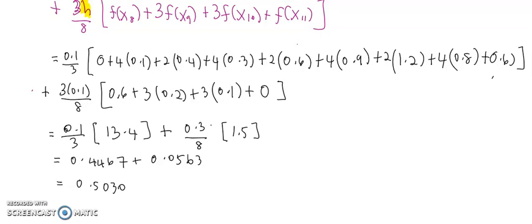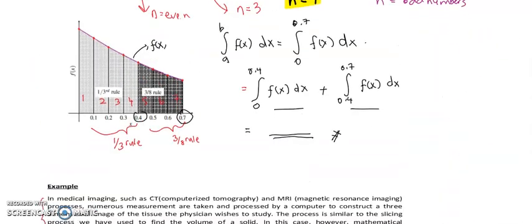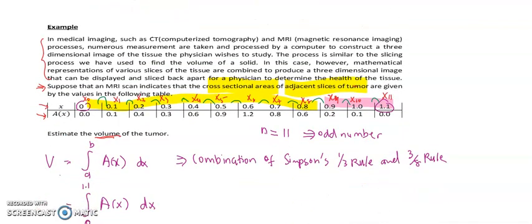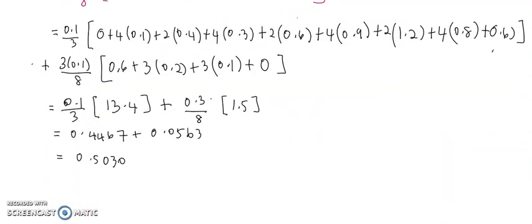For the unit, let's refer to the question. The variables are the area and adjacent slices of tumor. A slice may be in centimeters or millimeters. Based on this question, no units are given, so we can assume centimeters. Therefore, the unit is centimeter cubed.